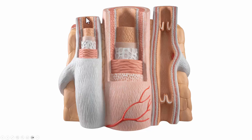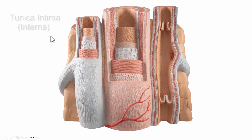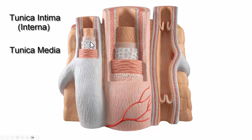Let's take a look at the different parts of the vein. In both the vein and the artery we're going to have three layers called tunics. We have the tunica intima or interna, which is the innermost layer; the tunica media, which is made up of smooth muscle; and then the tunica externa.